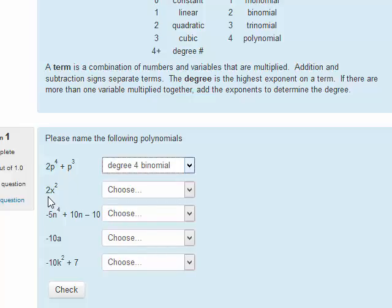Do the same thing with the next one. 2x squared. Well, this is a monomial. There's just one term. We've got to figure out the first name based on the degree. We look at the variable. It's an x. It's x squared. Since it's squared, it makes it quadratic. So this is a quadratic monomial.